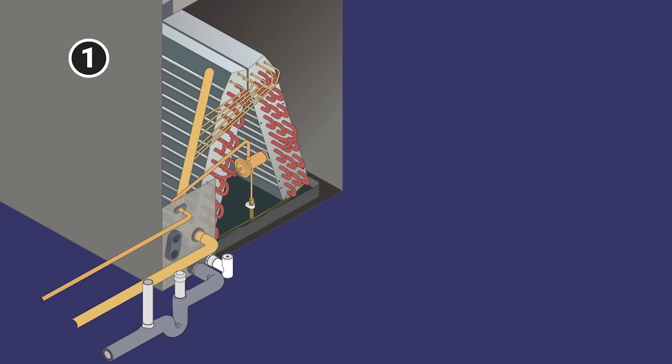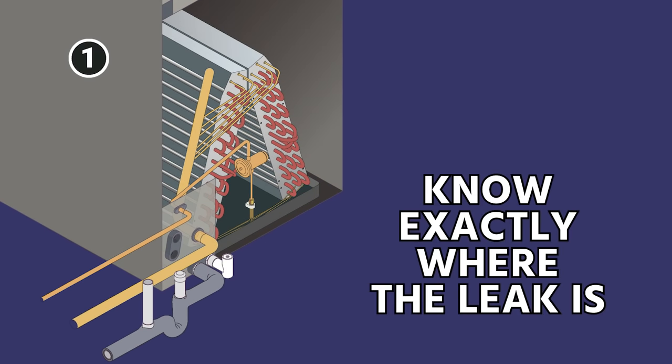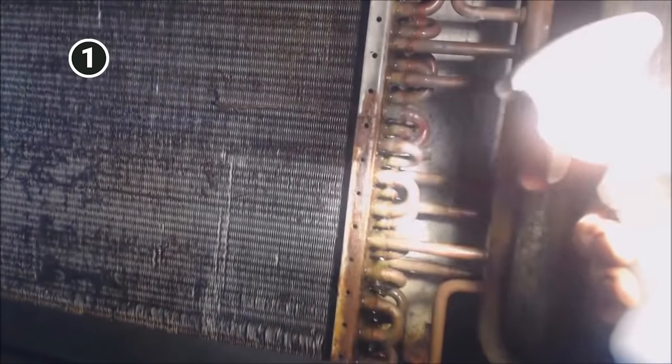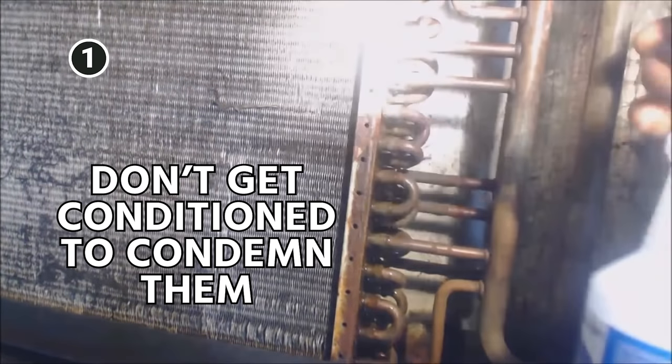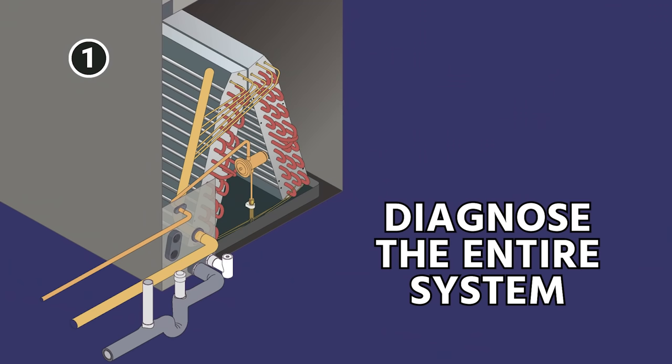The first step when you are going to replace an evaporator coil is to make sure that you know exactly where the leak is before you replace it. Because they have been so prone to leak in so many markets and in so many different systems, a lot of times technicians get so conditioned to condemning them that they don't diagnose the entire system.